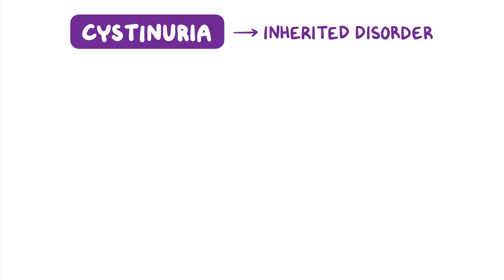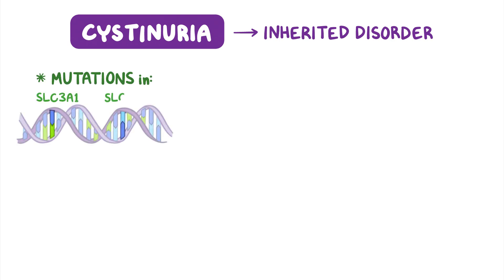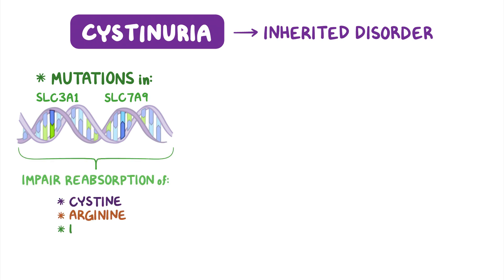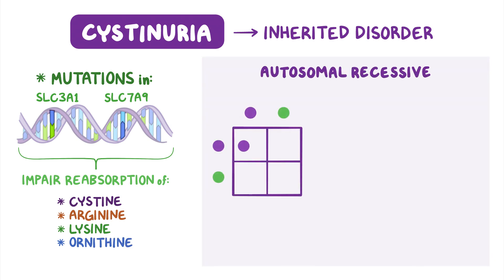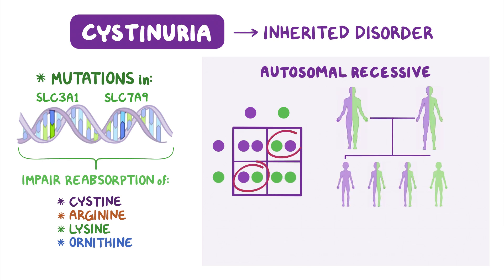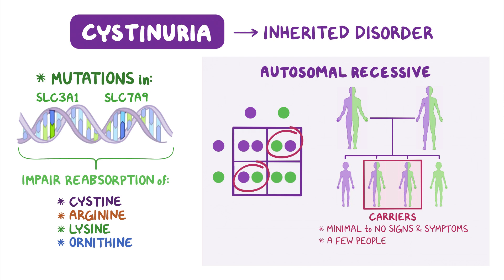Cystinuria is an inherited disorder caused by changes or mutations in either the SLC3A1 or SLC7A9 gene. These mutations impair the normal reabsorption of cysteine, arginine, lysine, and ornithine. Cystinuria is an autosomal recessive disorder, which means an individual needs to inherit a mutated copy of the SLC3A1 or SLC7A9 gene from each parent to be affected. If an individual inherits one mutated and one normal copy, they are considered carriers for the disorder. Carriers usually have minimal to no signs and symptoms. A few people seem to make stones with only one abnormal SLC7A9 gene.